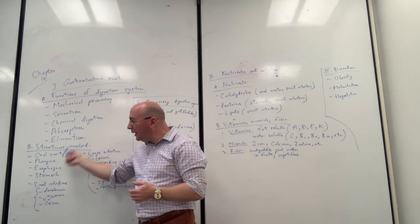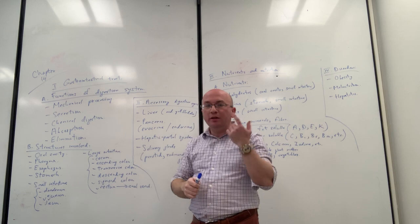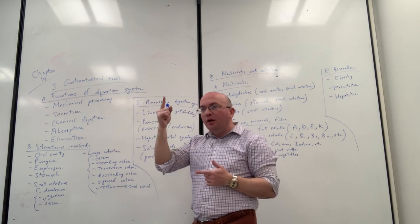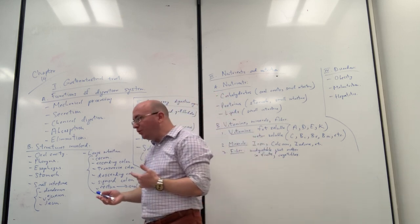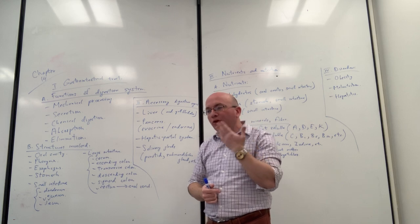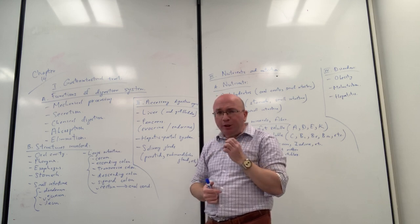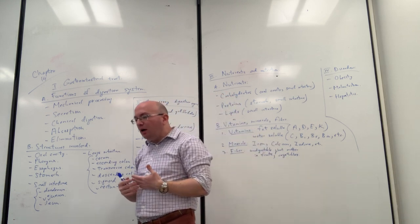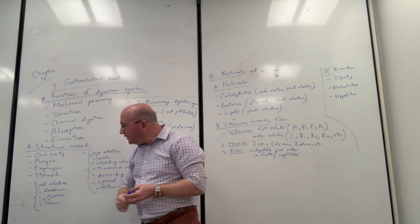Now let's talk about the structures involved. We want to trace the entire gastrointestinal tract from the entry point of food when you ingest it to the elimination process. There's a direct connecting line from the mouth all the way down to the anal canal where the waste will be expelled. We start at the oral cavity, which is just another word for the mouth, where you put in the food, chew it, mix it with saliva, and begin breaking it down. The better you chew the food, the easier it is for the stomach to process and absorb it.